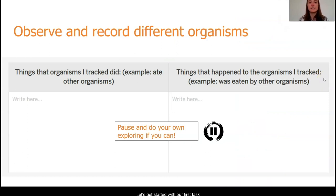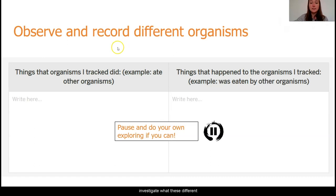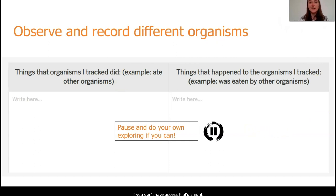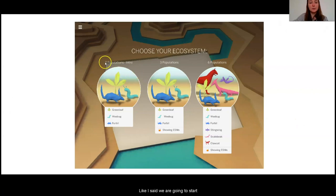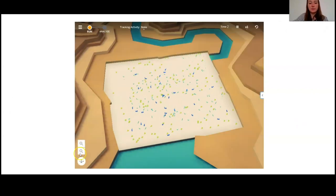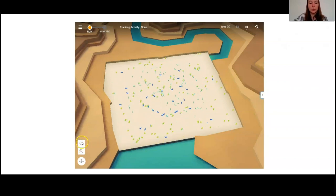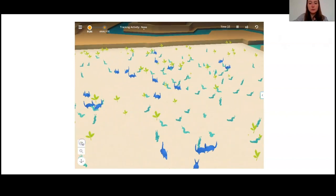So let's get started with our first task. To really understand why populations change, we need to understand what the individual organisms are doing in these populations. I would like you to open up the digital model if you can and investigate what these different organisms are doing and what things are happening to them. If you have access, this would be a great time to pause the video and set up a data table on your paper just like mine. If you don't have access, that's alright — you can follow along with me while we look at the digital model together. We're going to start with this three populations intro and jump right in. Our task is to observe what the individual organisms are doing or what is being done to them.